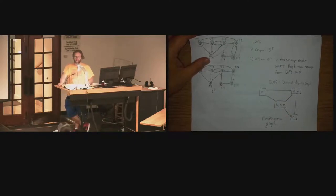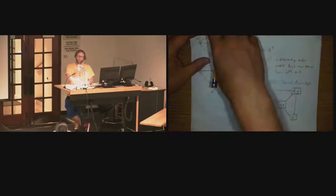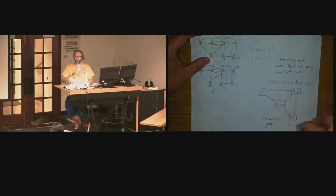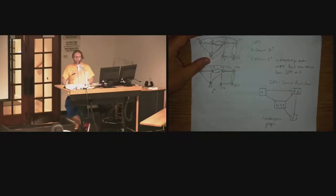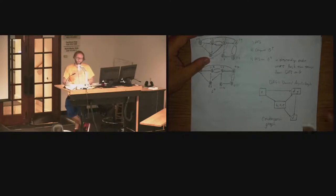I forget the technical term, but I think it's called a homeomorphism — you're mapping one class of graphs to another class and preserving some property. There are a whole lot of these morphisms: endomorphisms, homeomorphisms, homomorphisms, isomorphisms, et cetera.